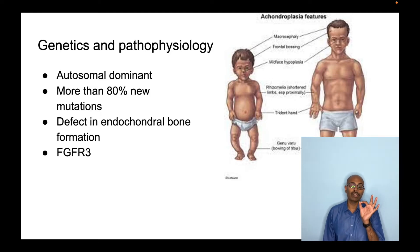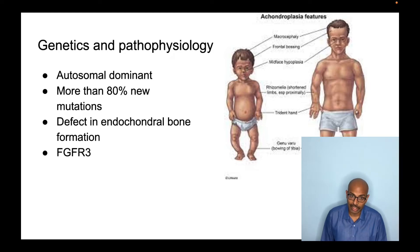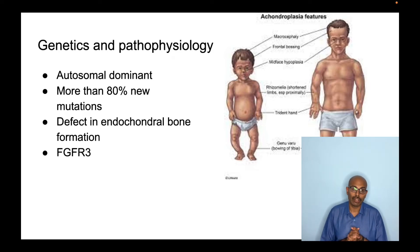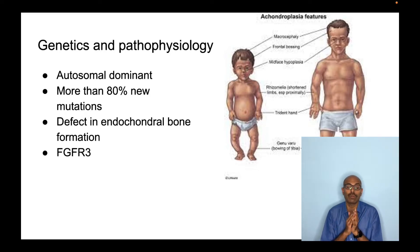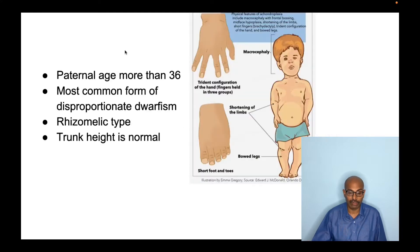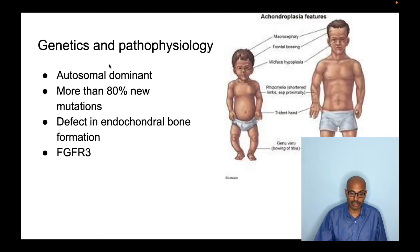Achondroplasia is very important because it is the most common form of disproportionate dwarfism. You must know all the features of achondroplasia because quite a few questions have been asked in the past and they will be asked in the future as well.